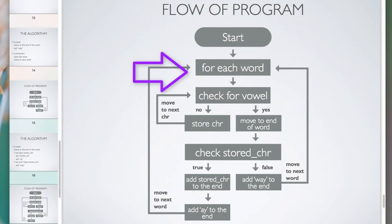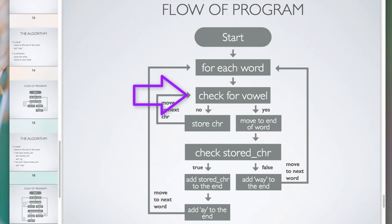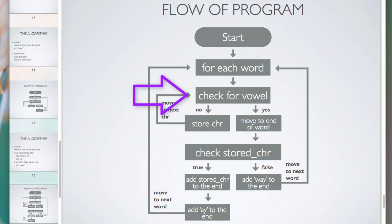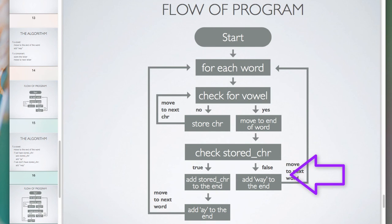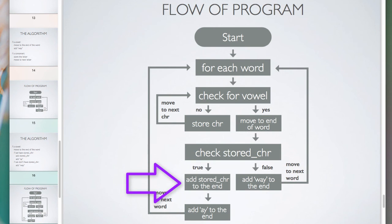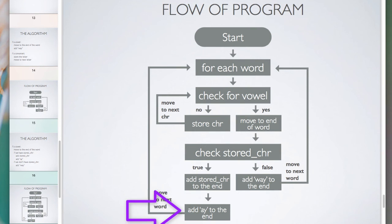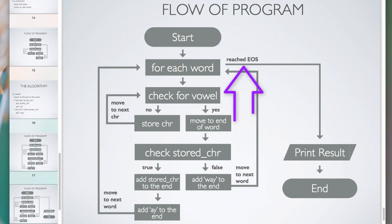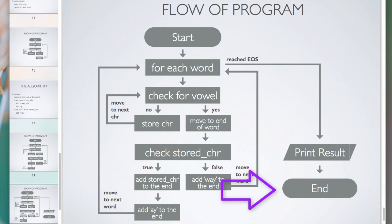So the algorithm looks like this: for each word, check for a vowel. If no, move to the next character and keep looking — store and move and store and move — until we hit a vowel. Then move to the end of that word and check stored characters. If there's nothing stored, add 'way' to the end and move to the next word. If there is stuff stored, add all the stored characters to the end, then add 'ay', then move to the next word. Keep doing that until we reach the end of the sentence, then print the results.